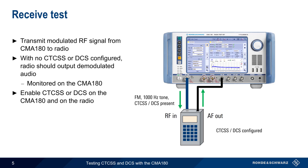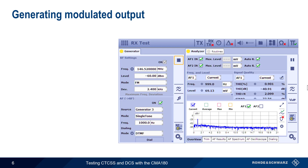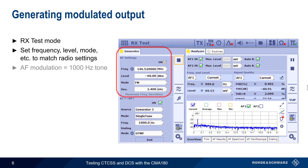Either CTCSS or DCS can then be configured and enabled on both the CMA180 and on the radio under test. In this case, the radio should only output audio if the same CTCSS tone or DCS code is configured on both devices. Since we're testing the radio's receive, we'll be using RxTest mode. Under Generator, we configure the frequency, mode, level, etc. to match the radio under test, and under AF, we configure the modulating signal — a 1000 Hz tone in this case.